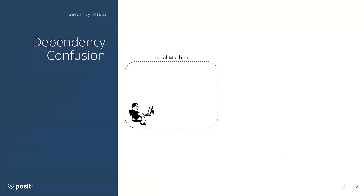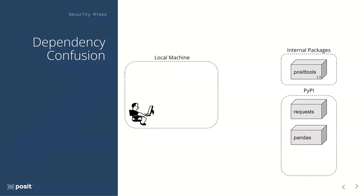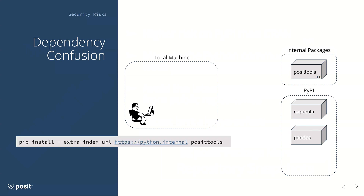Finally, I want to talk about a different variant that preys particularly on larger teams — especially those who develop and share their own internal packages to supplement their work — that we call dependency confusion. Let's go into our clean environment, where we're now part of a larger company that has its own internal packages. Let's say we're at Posit and we have our internal Posit tools package that we use, along with some public packages from PyPI. We may even have our own internal packages in a PyPI-like repository so that pip can install from there, using an extra-index-URL flag pointing to our internal server.